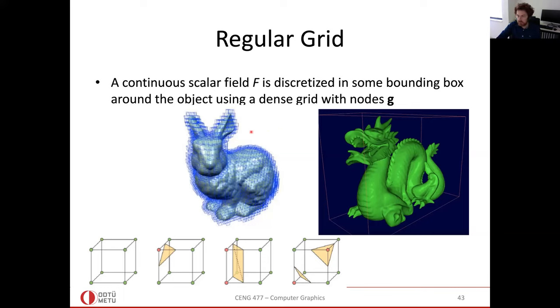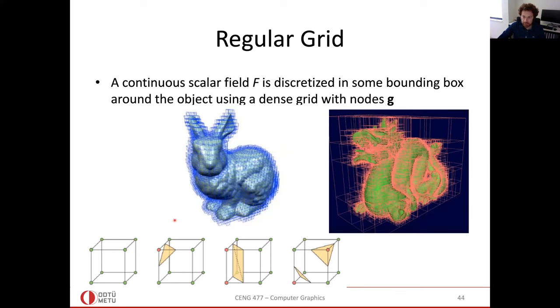Then you omit, discard the totally outside cubes. I don't even draw them here. And for the ones that are intersecting the object, we will be able to extract the surface pieces, the surface triangles, as we will see later. But again, as far as the structure goes, this grid implicitly defines this bunny shape, or this dragon shape. These models, they implicitly define it using the values on the grid vertices.